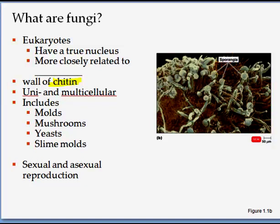Fungi can be either unicellular or multicellular. For example, yeast is unicellular, while molds produce spores out of filaments — such as rhizopus — and are multicellular. Fungi are dimorphic and include molds, mushrooms, yeast, and slime molds. They have both modes of reproduction — they reproduce sexually and asexually. We will study their life cycle in more depth later.